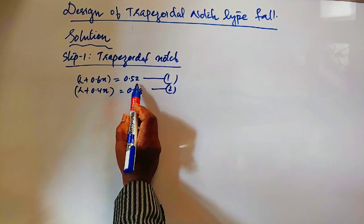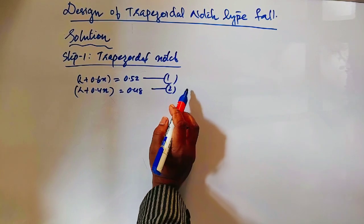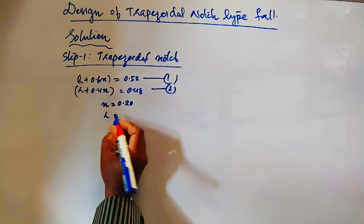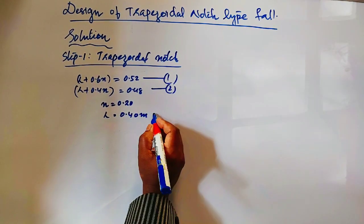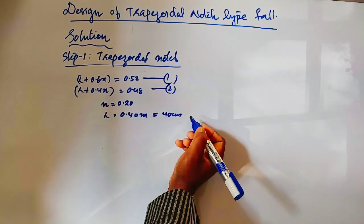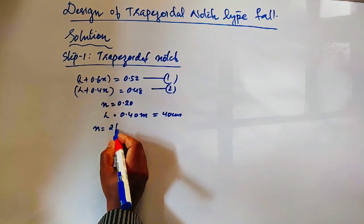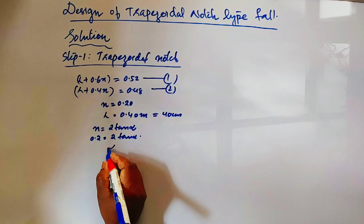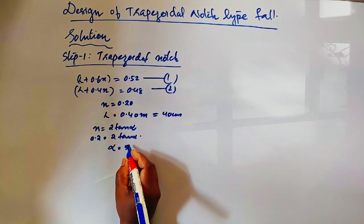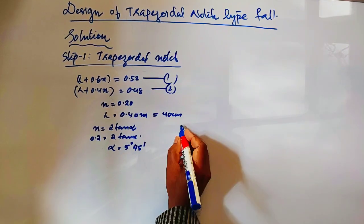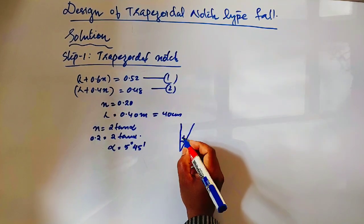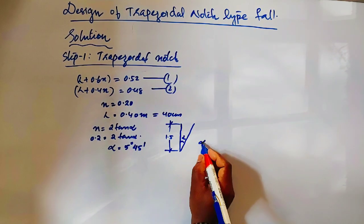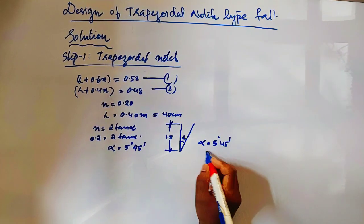We now have two equations with two unknowns: (1) L + 0.6N = 0.52, and (2) L + 0.4N = 0.48. Solving these simultaneously gives N = 0.20 and L = 0.40 m (40 cm). Since N = 2·tan(α), we have 0.20 = 2·tan(α), giving α = 5° 45′.